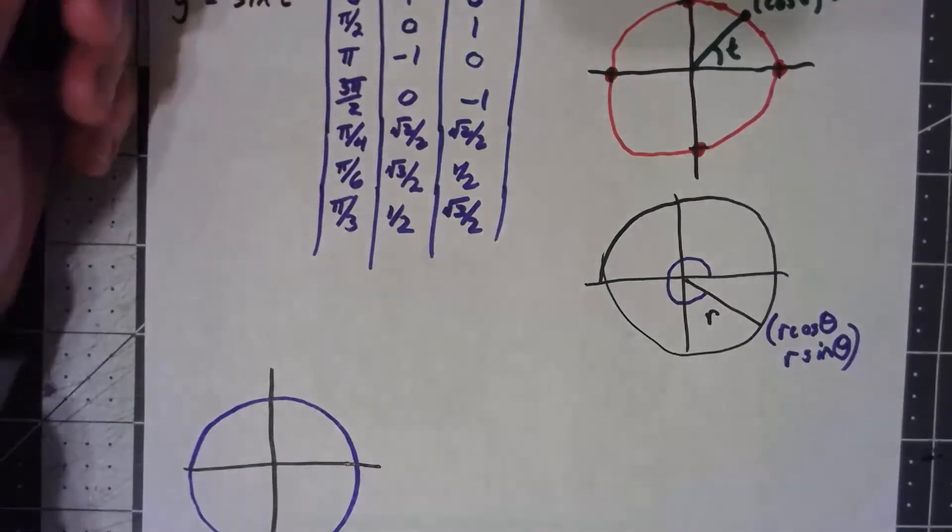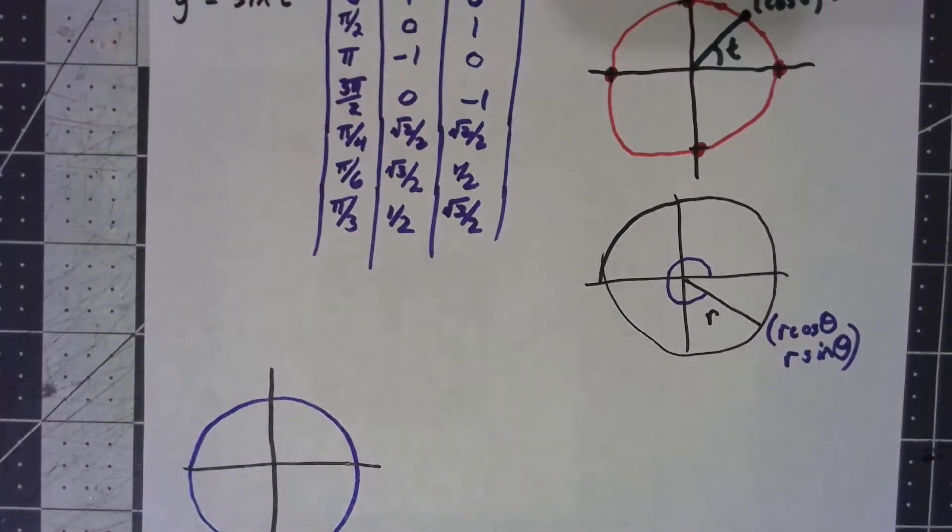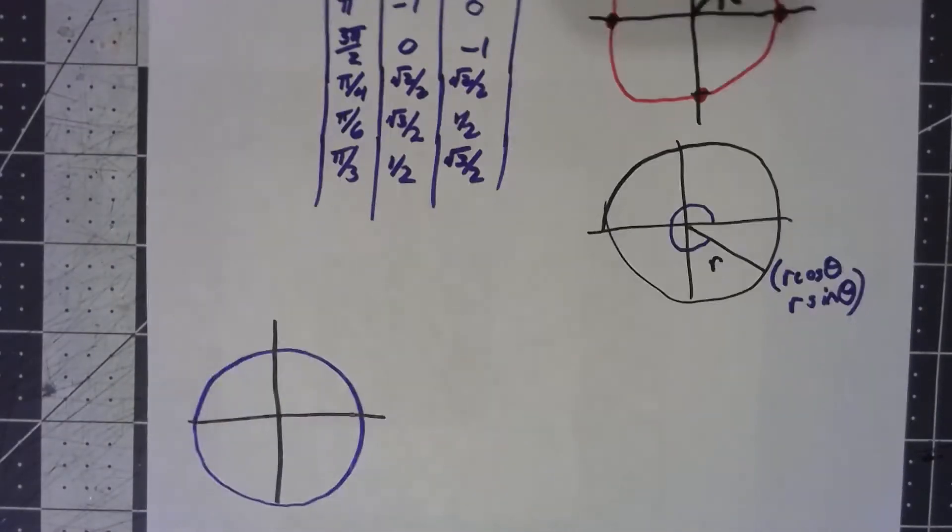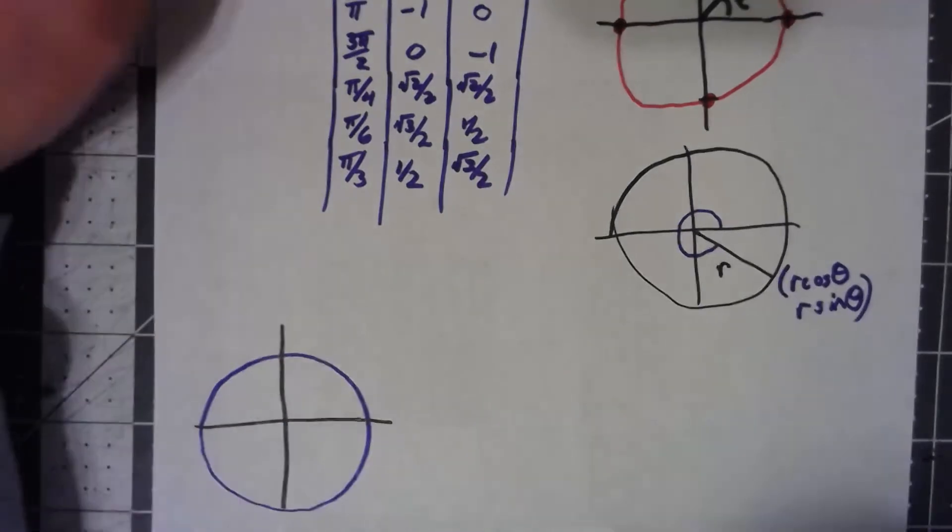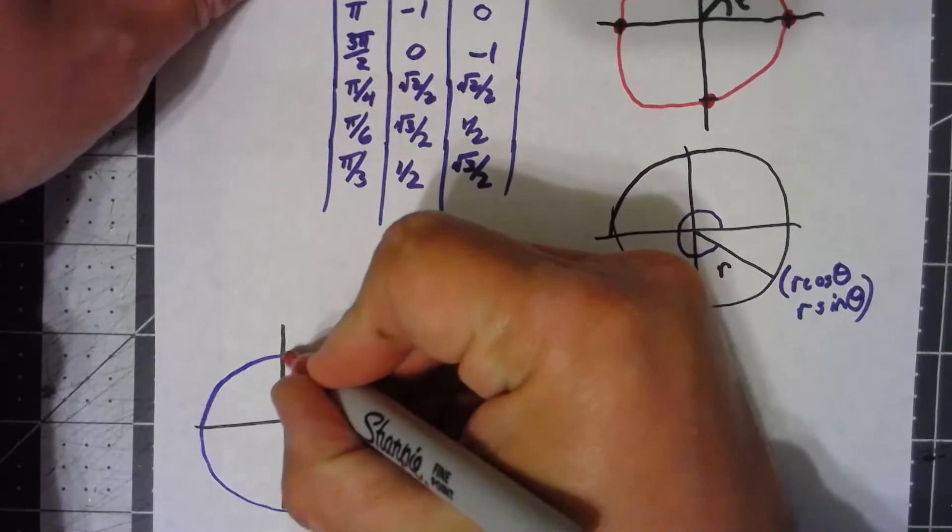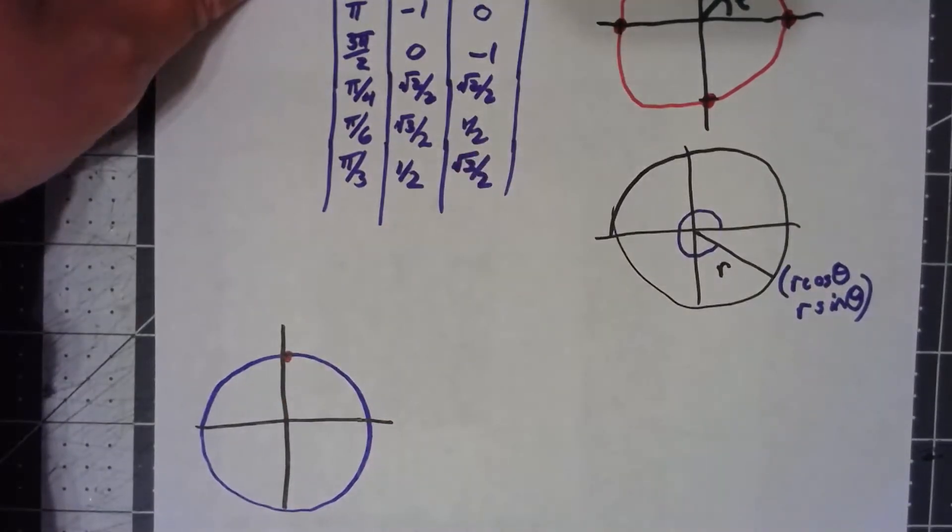Because remember, the parameterization includes this idea of movement. So going clockwise is different from going counterclockwise, and a starting position is going to be different.